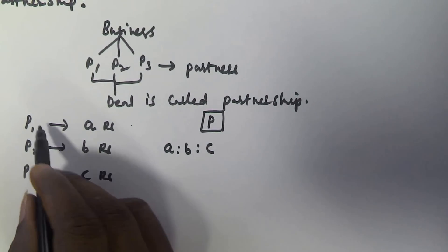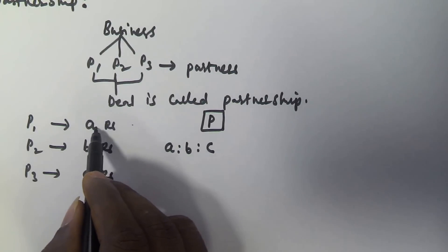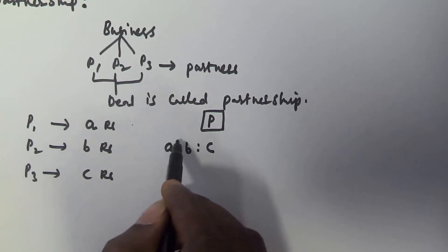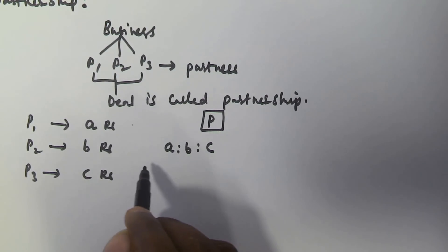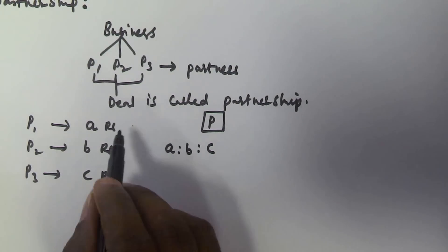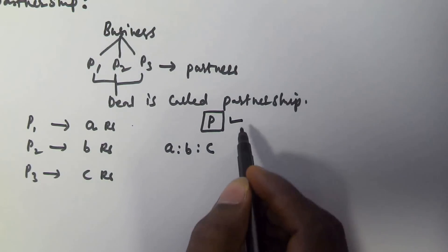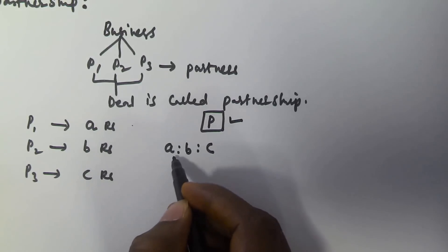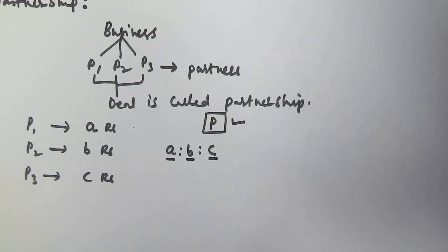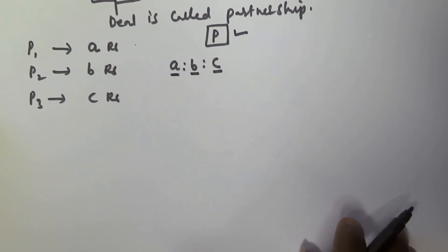For example, P1 invested A rupees for one year, P2 invested B rupees for one year, and P3 invested C rupees for one year — the same number of years. Then the profit they got is shared in the ratio of the amounts they invested, that is A : B : C. Now we will see one example problem based on this.